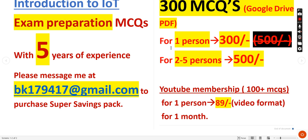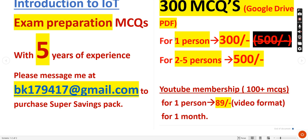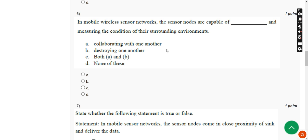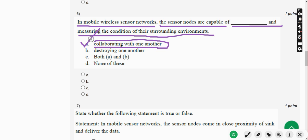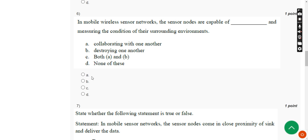Many students have taken our pack and got 70 to 80 percent results. Now, back to the solutions — sixth question: in mobile wireless sensor networks, the sensor nodes are capable of dash and measuring the condition of their surrounding environments. The answer is Option A — collaborating with one another. Mark Option A.